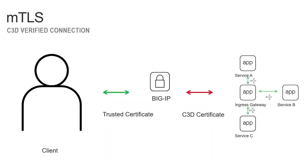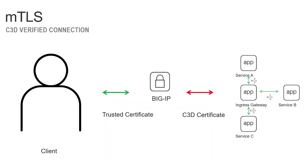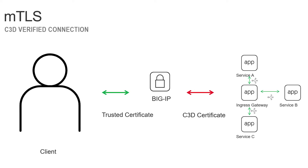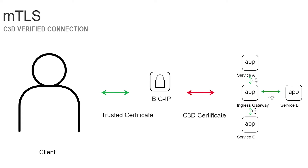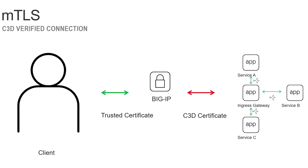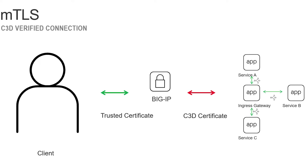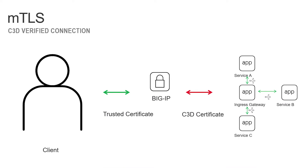In the second example, we will look at using the C3D feature of the BIG-IP, to convert a trusted certificate that is presented by a client to a C3D certificate that is trusted by Istio. This is useful in cases where you are unable to install a trusted certificate in Istio. Instead, the BIG-IP will proxy that trusted connection to the Istio service mesh and dynamically regenerate the client certificate.